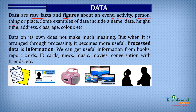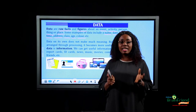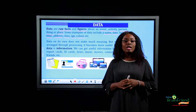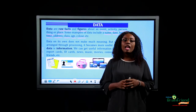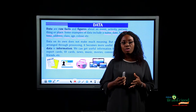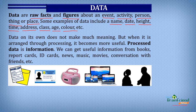Some examples of data include a person's name, today's date, a person's height, the time, a person's address, a class, a person's age, or the color of anything. It is important to note that data on its own doesn't make much meaning. But when it is arranged through processing, it becomes more useful, and this more useful form is called information. In other words, information is processed data.